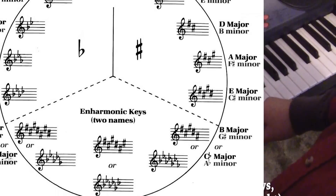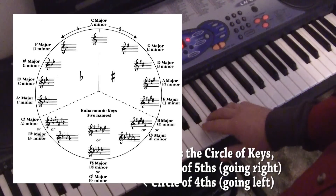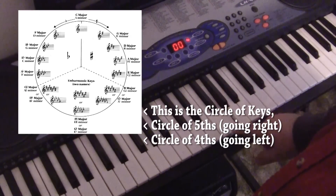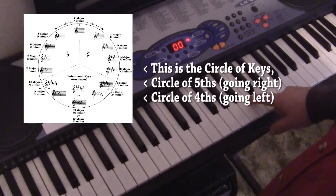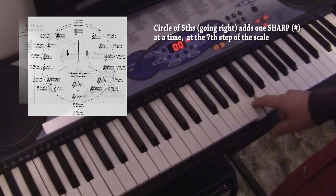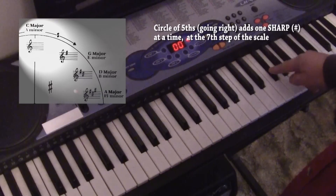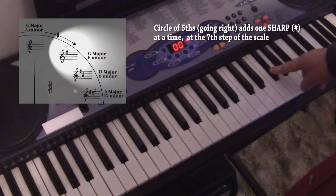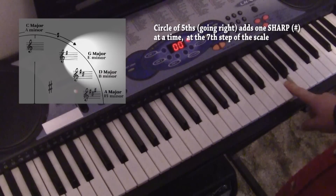In order to have a major scale you've got to follow the pattern: two whole steps and a half, then three whole steps and a half. Starting from here: one whole step, one whole step, and a half. That half step happens to be right there. Then a whole step, a whole step, and a whole step — and we have our first black key involved. There's the half step to the octave.